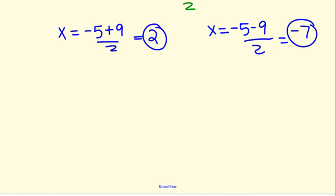These are your two solutions to your quadratic equation. If you wanted to verify your answers, you could substitute 2 and negative 7 back into the original equation to see that those are solutions to that quadratic equation. Thank you.